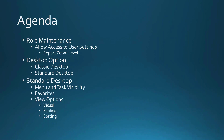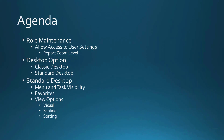First we're going to talk about Role Maintenance and access to a new option called User Settings. Within User Settings we'll talk about the Desktop option, but we'll also talk about another option called the Report Zoom Level. Then we'll talk about the differences between the Classic desktop and the Standard desktop, and drill into some Standard desktop detail: Menu and Task Visibility, Favorites, and some view options.